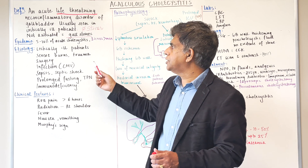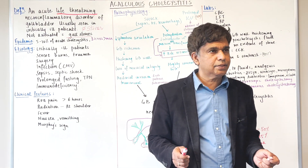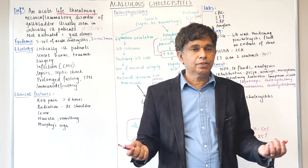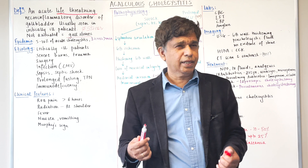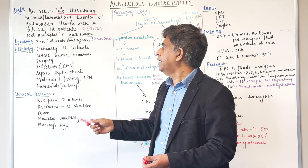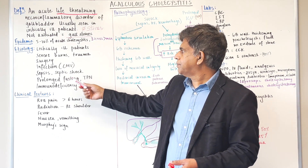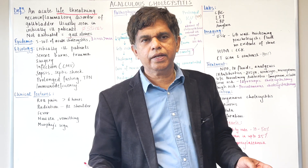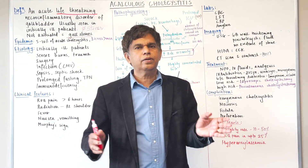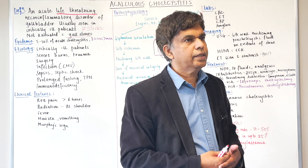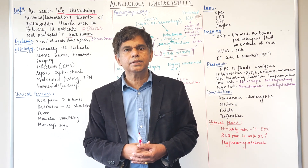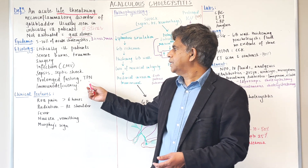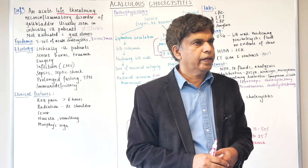The etiology: this condition is mainly seen in the ICU in critically ill patients. It can occur after surgery — for example, after heart surgery, with about 1–2% incidence of acalculous cholecystitis post-operatively. Other causes include infection (CMV), sepsis, septic shock, and prolonged fasting. Intermittent fasting is a growing phenomenon worth studying in this context. TPN and immunodeficiency are also associated.